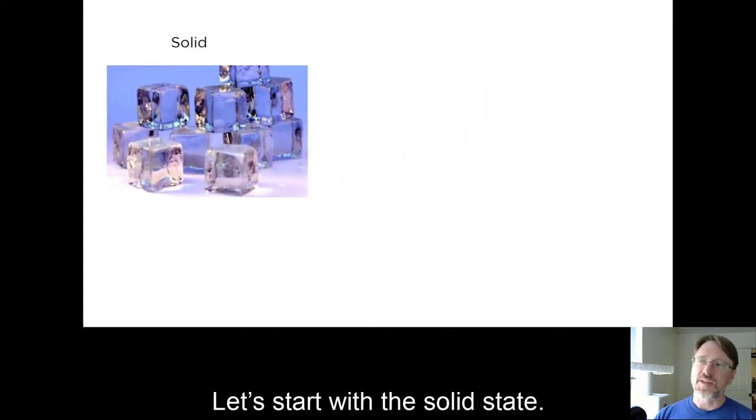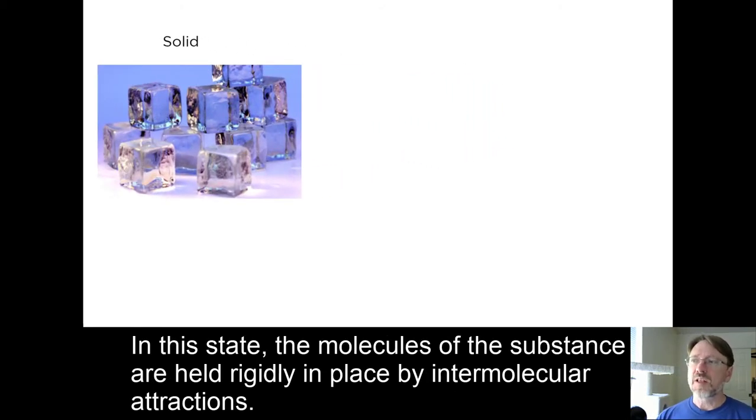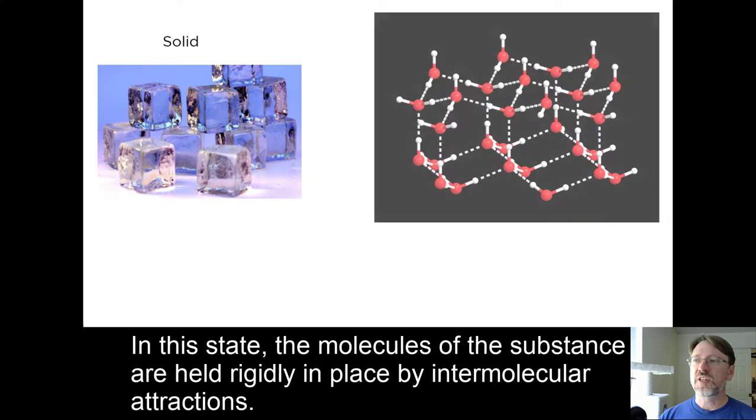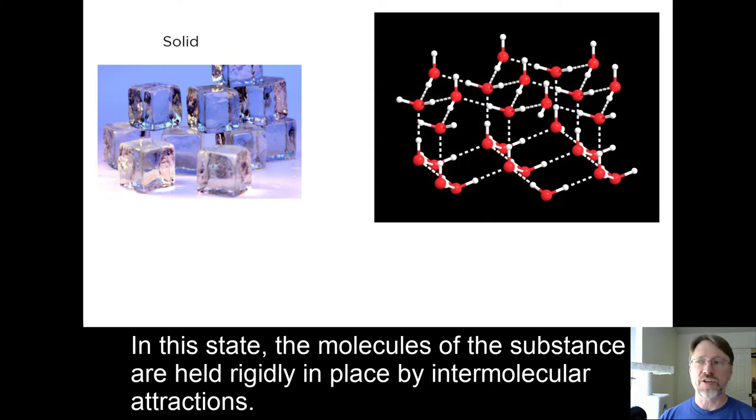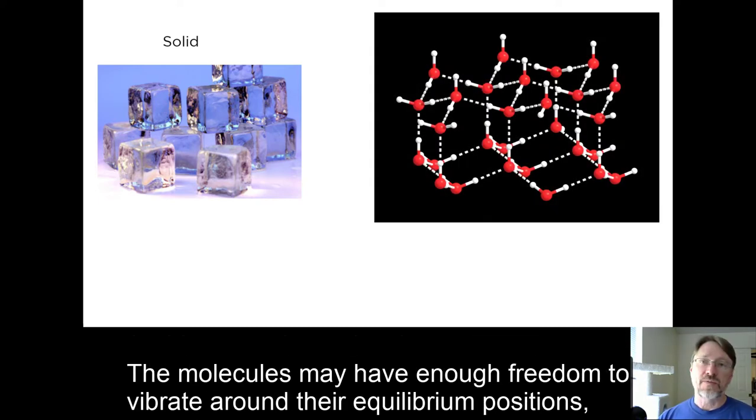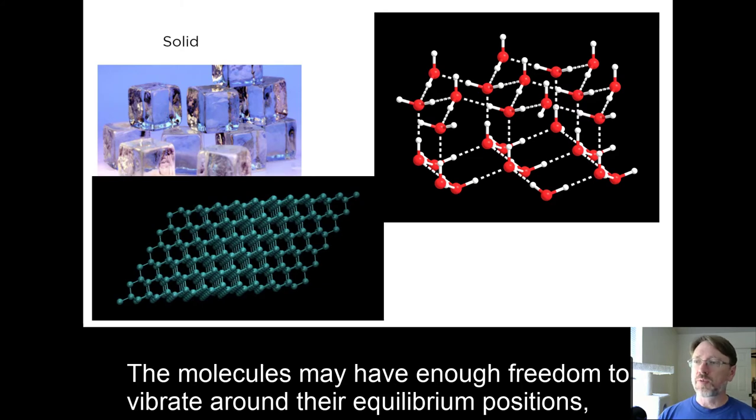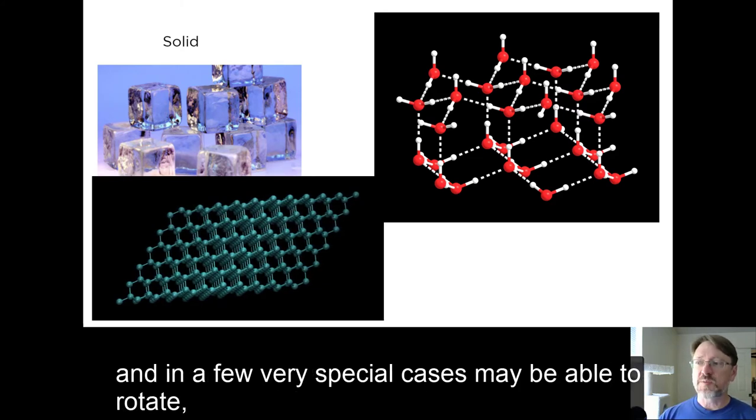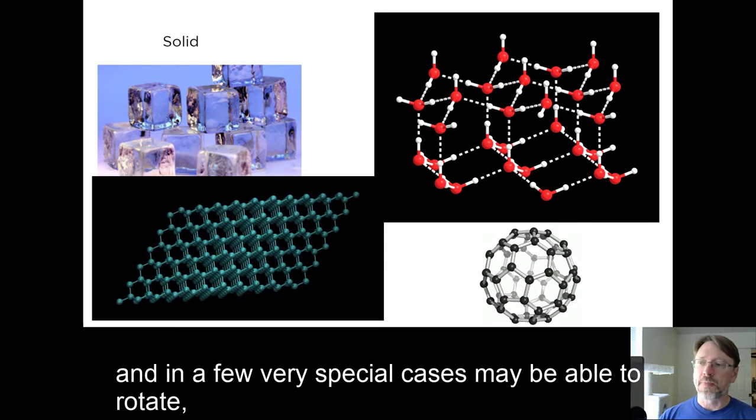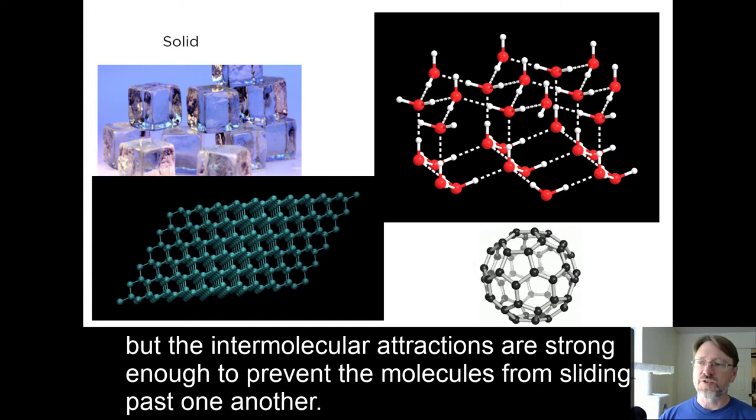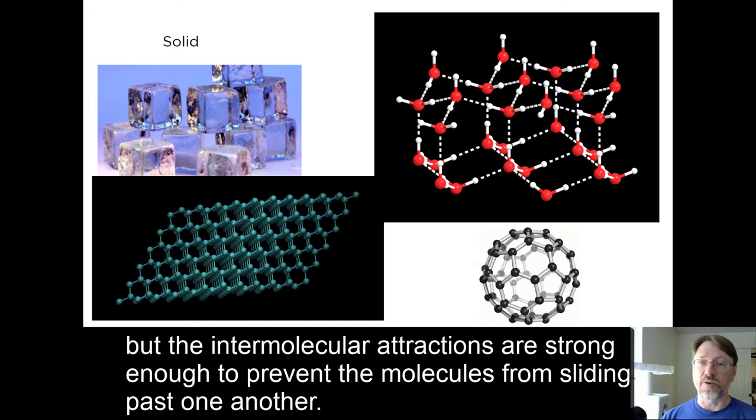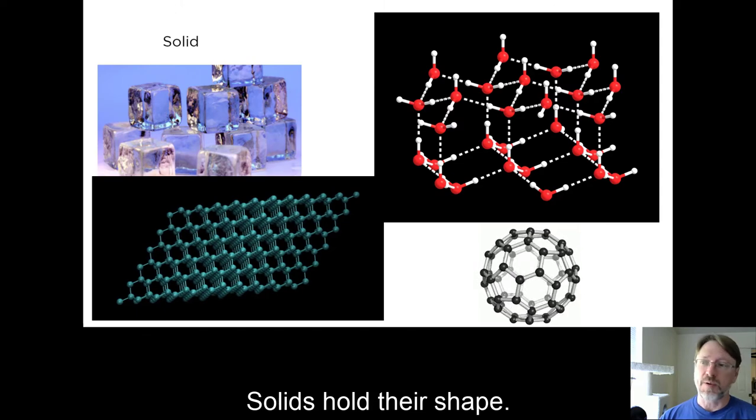Let's start with the solid state. In this state, the molecules of the substance are held rigidly in place by intermolecular attractions. The molecules may have enough freedom to vibrate around their equilibrium positions, and in a few very special cases may be able to rotate. But the intermolecular attractions are strong enough to prevent the molecules from sliding past one another. Solids hold their shape.